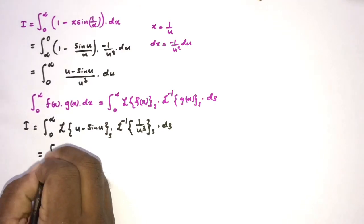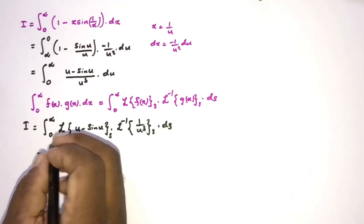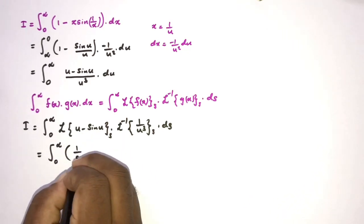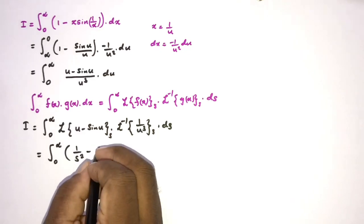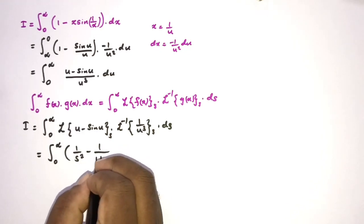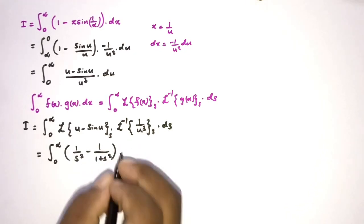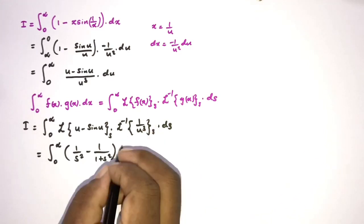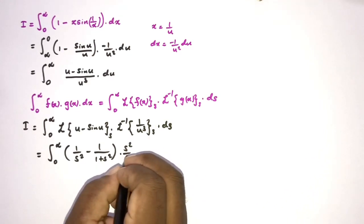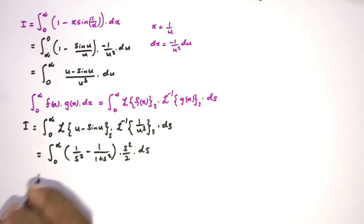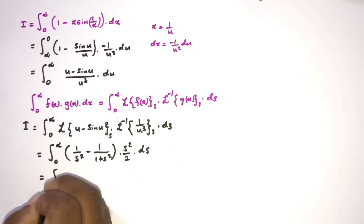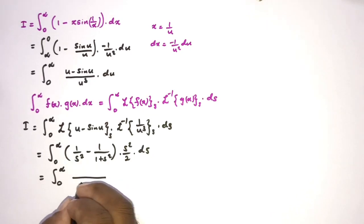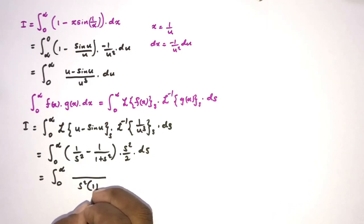We know the Laplace transform of (u minus sine of u) is 1 over s squared minus 1 over (1 plus s squared). The inverse Laplace transform of 1 over u cubed is s squared over 2. So the integral becomes the integral from 0 to infinity of these two expressions multiplied together, ds.